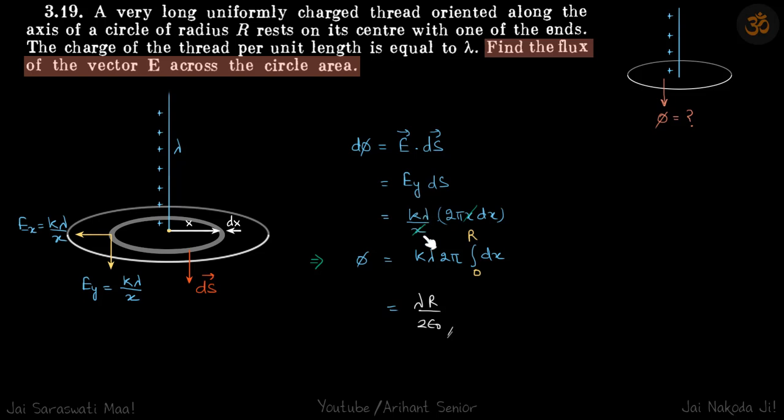Ey is k lambda by x, and ds is 2 pi x dx. Put the limits of x from 0 to r and get the answer.